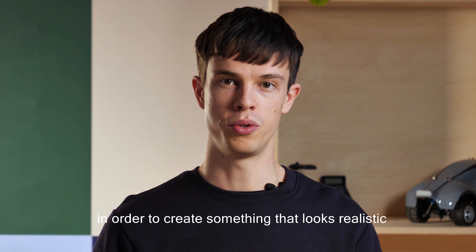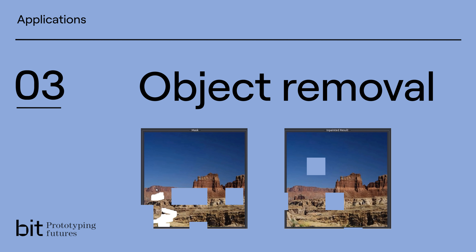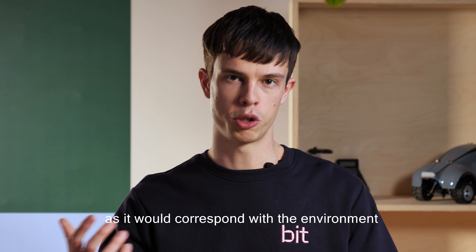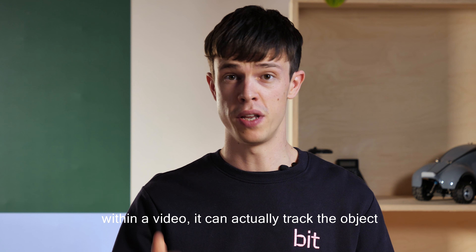The third application is about object removal. When taking a picture on your holiday, there may be tourists in the background that you'd rather not have in your picture. With image generation, you can paint out those objects in an image or a video, and it will generate what's behind the object as it would correspond with the environment. Within a video, it can actually track the object throughout and paint out everything that would be behind it from the point of view of the camera.